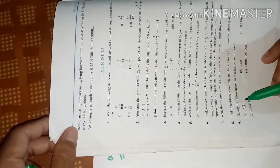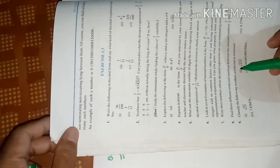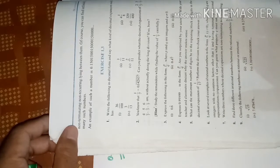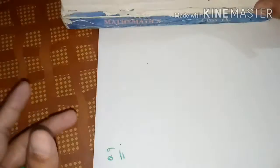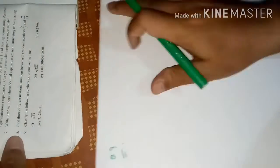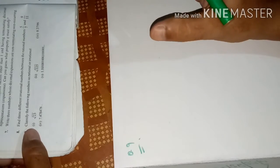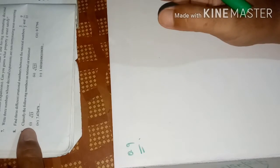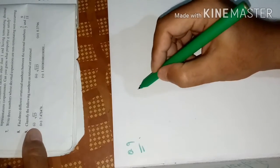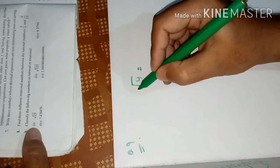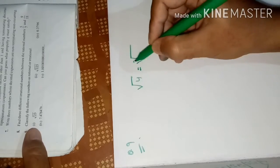Next, question number 9: classify the following numbers as rational or irrational. By looking at the number itself, we have to determine its type. A rational number is one whose decimal expansion is terminating or repeating. If it is non-terminating and non-repeating, we call it irrational.